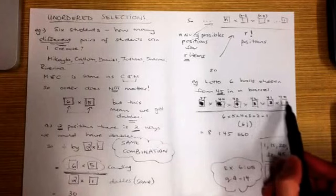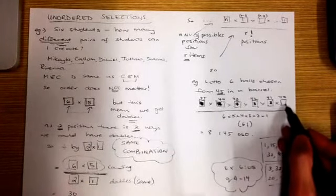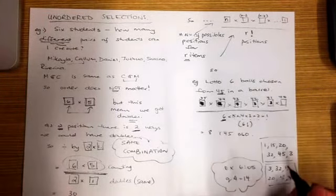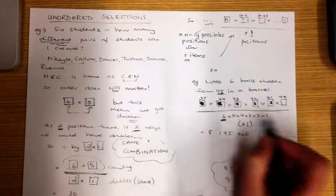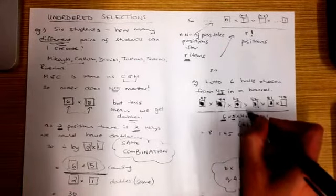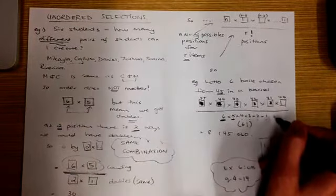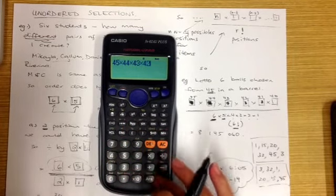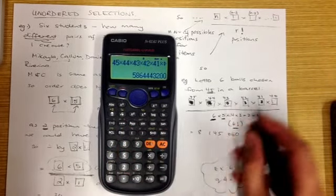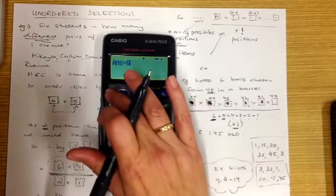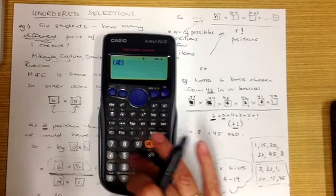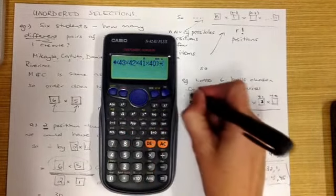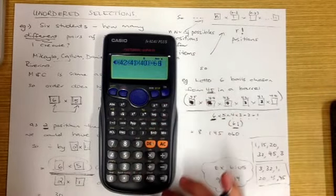So we've worked out the counting multiplication principle: reducing by one — one less in the barrel — across six positions. Because we have six positions, we now need to divide by six factorial — six times five times four times three times two times one — because that's how many times the same combination will appear: six times in the first position will match, five times in the second position, four, three, two, one. So that's six factorial.